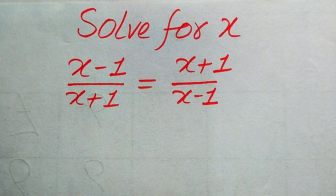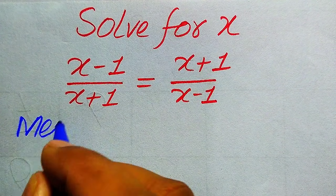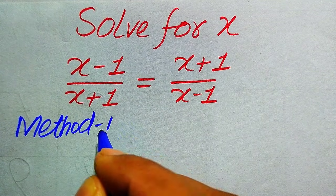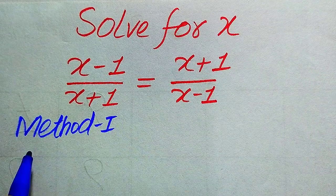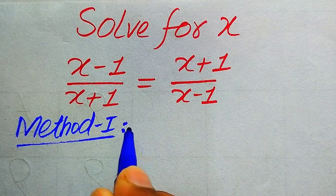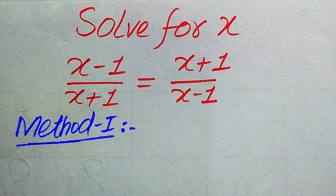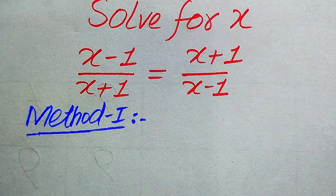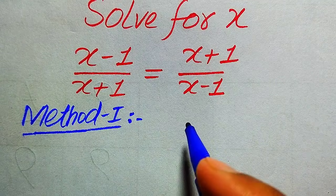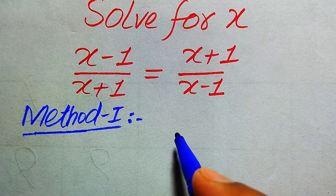We solve this problem using two methods. If you have any other method in mind, please don't hesitate to write it in the comment section. Now we move towards our first method, where we need to cross multiply the terms.